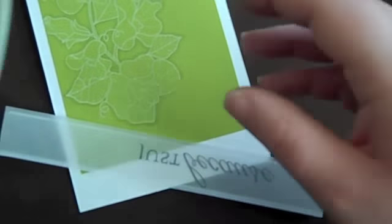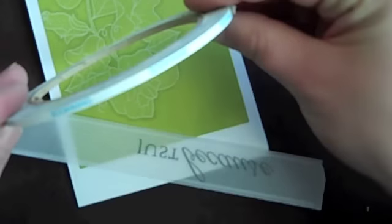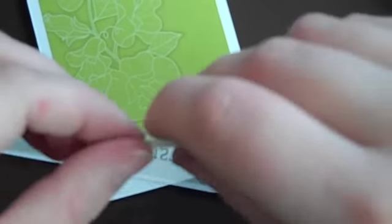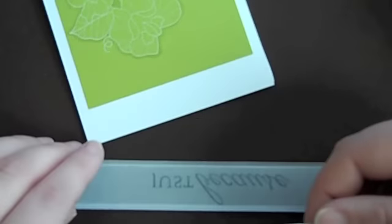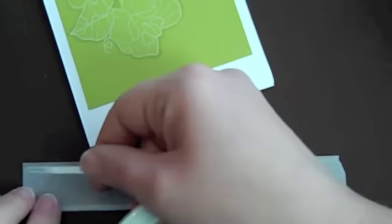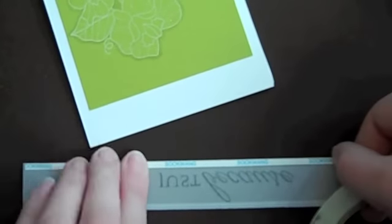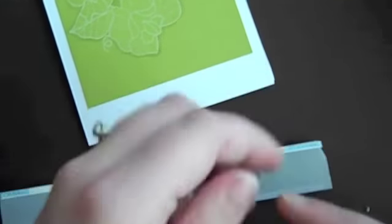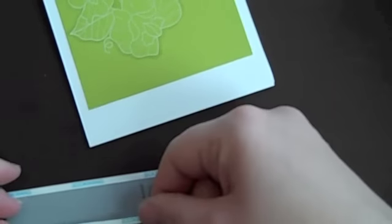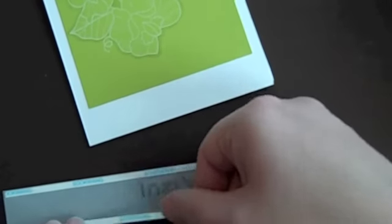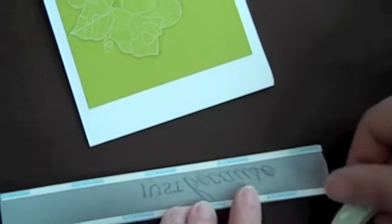For the vellum strip, I get asked all the time how to adhere vellum to a card. One of the things I like to do with these vellum strips for sentiments is when you do the scoring, it allows you to hide the score tape underneath the white area of the vellum that is established when you score.